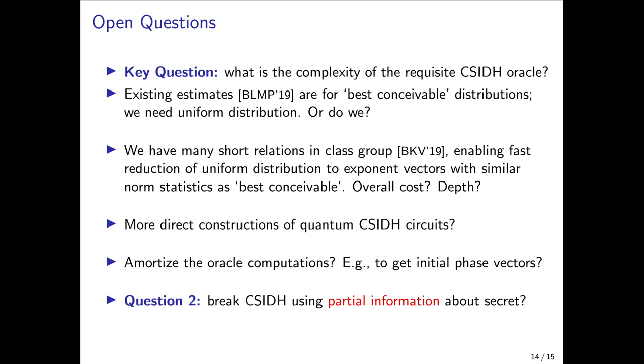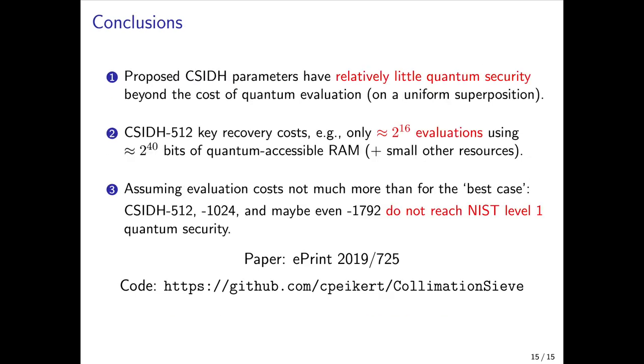Now I'll conclude with the conclusions again. The main one being that the proposed parameters for CSIDH provide relatively little quantum security beyond the cost of quantumly evaluating the function itself. I'll encourage you to read the full paper which is on ePrint and also have fun with the simulation code which is available on GitHub. And I hope to see you all in person healthy and well as soon as possible. Thanks for your attention.